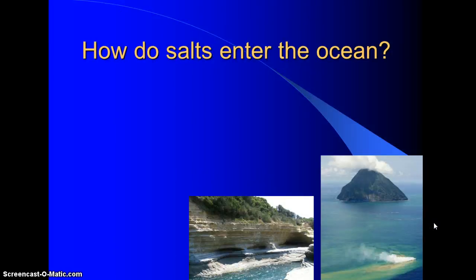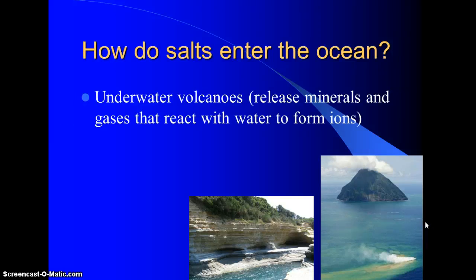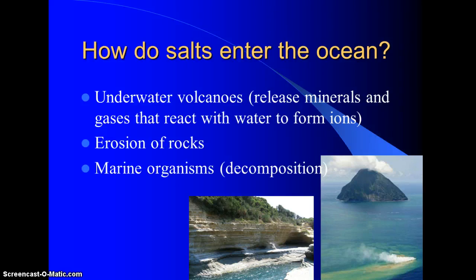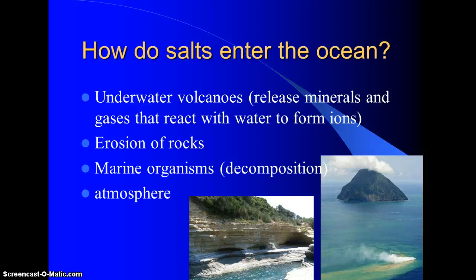How do salts enter the ocean? Underwater volcanoes release minerals and gases that react with water to form the ions making up salts. Erosion from rocks also puts ions into the ocean. Marine organisms that take up seawater decompose when they die and release those materials back into the water. The atmosphere provides some salt, especially through sea spray, but it's not a major contributor.